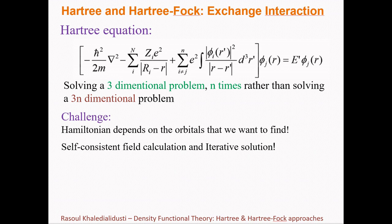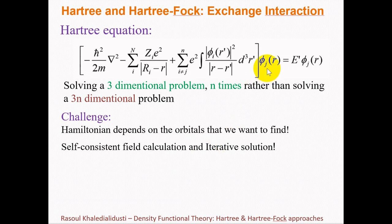There are some challenges here. This is a self-consistent field calculation and the effective Hamiltonian depends on the orbitals we are going to find. This must be solved iteratively, so we need an initial guess for a set of orbitals to build the effective Hamiltonian, then we find a new set of orbitals by solving the single-electron Schrödinger equation, and we iterate until finding self-consistency.